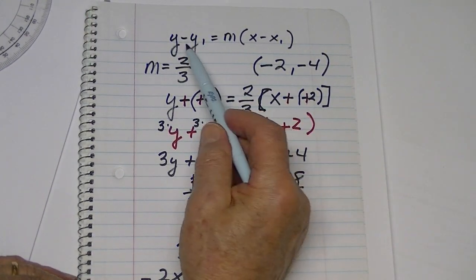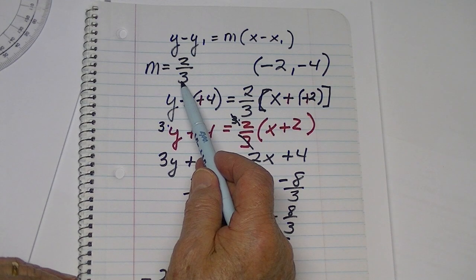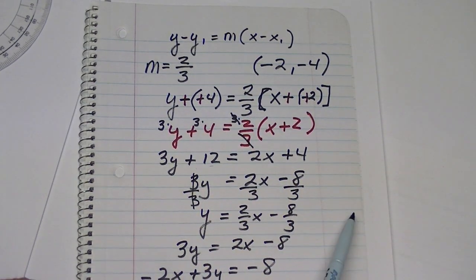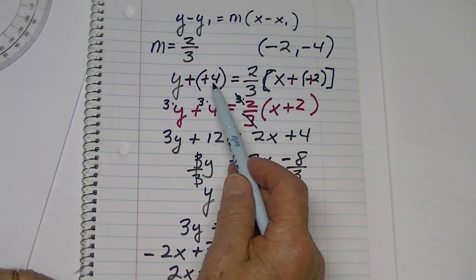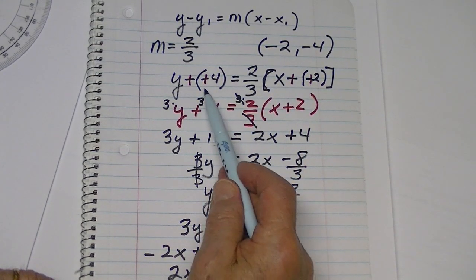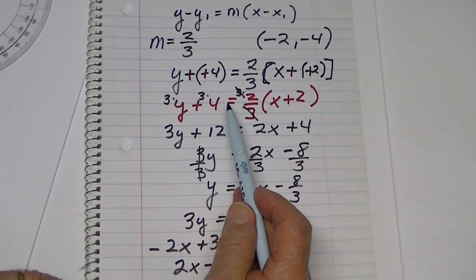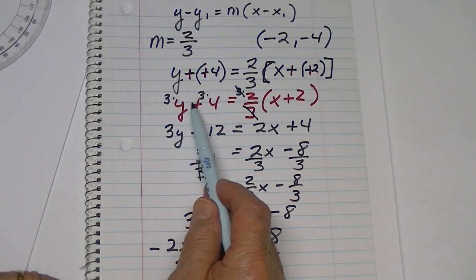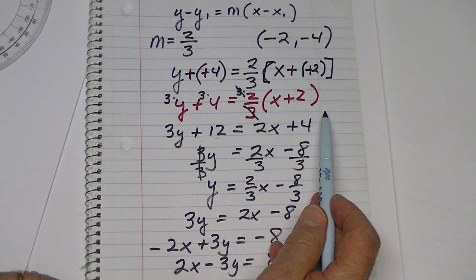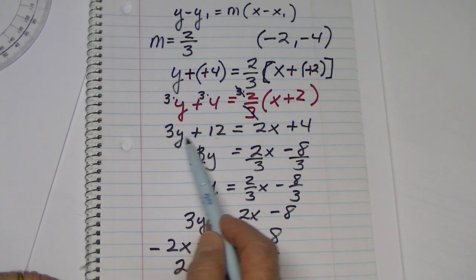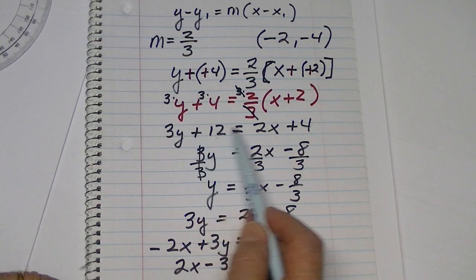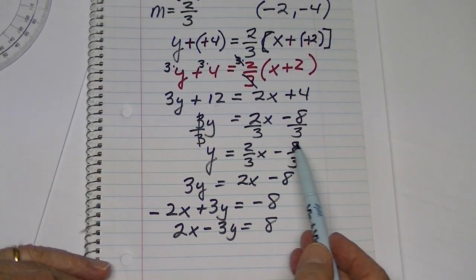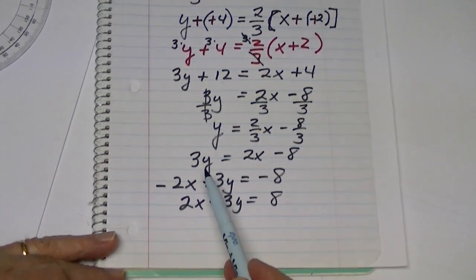In review: we start with point-slope form, we have the slope and one point, we substitute carefully being mindful of the signs and changing them as needed, then get rid of fractions by multiplying each term by the lowest common denominator. From there it's easy to put the equation in slope-intercept form, or from that earlier stage to put it in standard form.